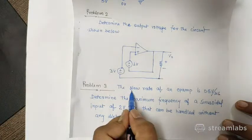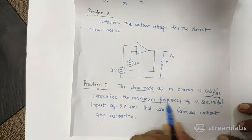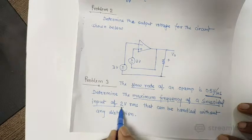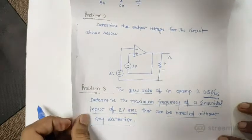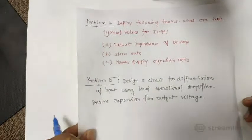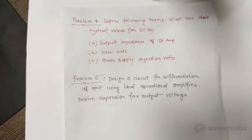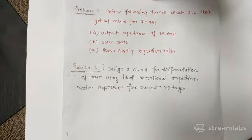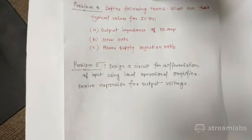The third problem for set 0 is that the slew rate of an op-amp is given as 0.5 volt per microsecond. Find the maximum frequency of a sinusoidal input with 2 volt RMS that will not create distortion in the output voltage. The fourth question asks to define output impedance, slew rate, and power supply rejection ratio. The fifth question is to derive the expression for a differentiation amplifier.